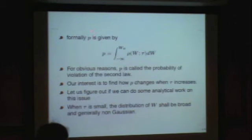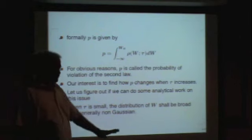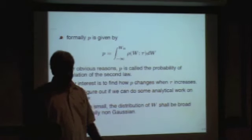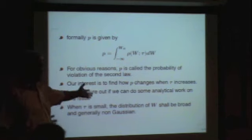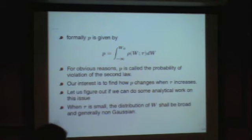So formally, the probability of second law violation is given by this integral. For obvious reasons p is called the probability of violation of the second law. But as I told you, if I calculate the average work done by saying that minus infinity to plus infinity w ρ(w) dw, that average work will always be greater than the reversible work. There is absolutely no question about it. This is essentially coming from the fact that your exponential function is a convex function.